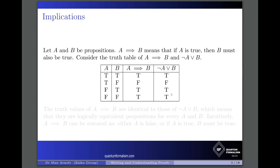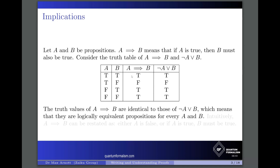Working through the same steps with the remaining columns, you get true and true. As we can see, the truth values of A implies B are identical to those of the negation of A or B. This means that the proposition A implies B and the proposition ¬A ∨ B are logically equivalent — they are just a different way of writing each other.